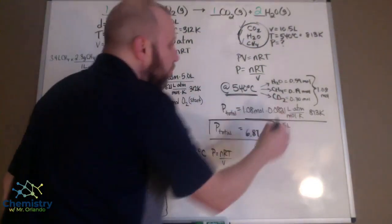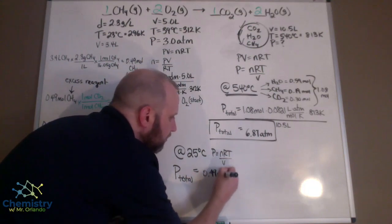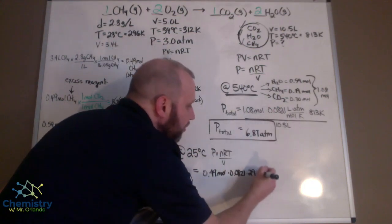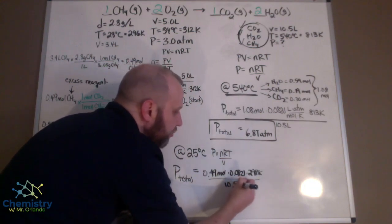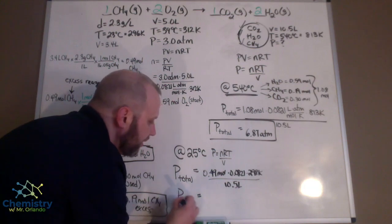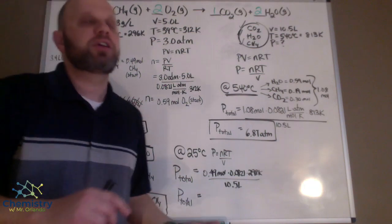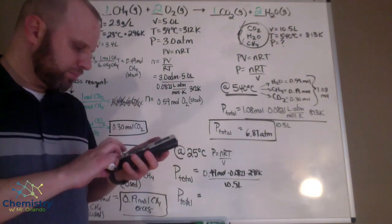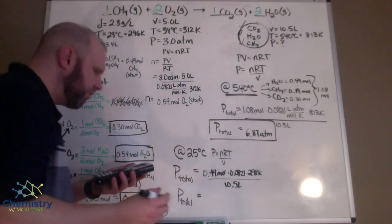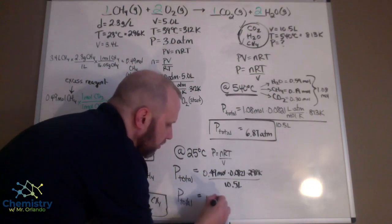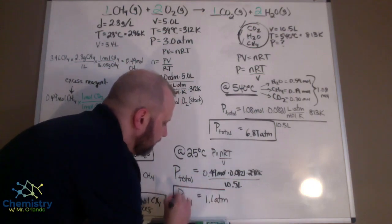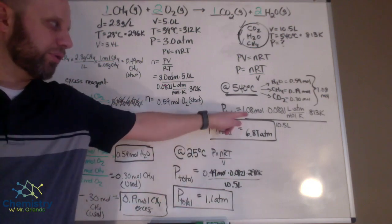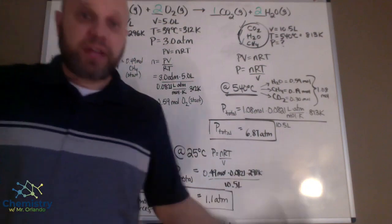Now the total number of moles is only 0.49 times 0.0821 times our temperature, which is 298 K. The volume of the container doesn't change, so that stays as 10.5 liters. Obviously our pressure is going to go down because it's at a lower temperature and has fewer moles of gas. That turns out to be a total pressure of 1.1 atm. This time we're limited to two significant figures because of the 0.49.